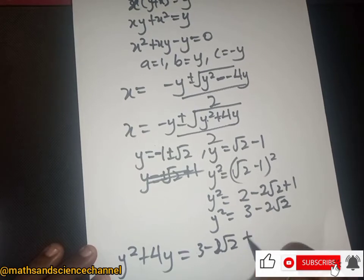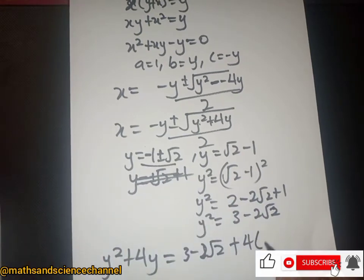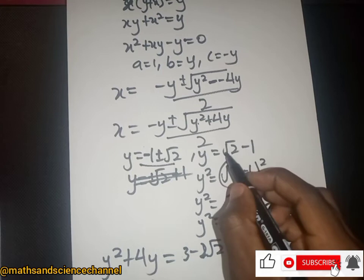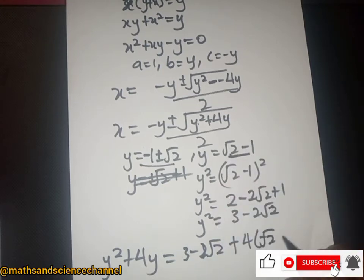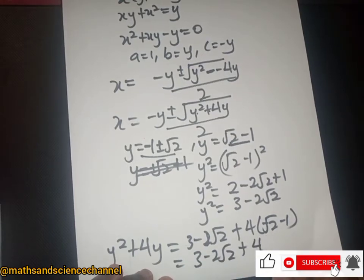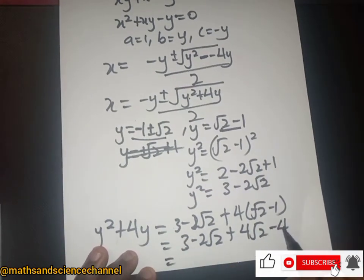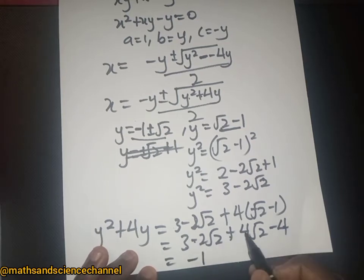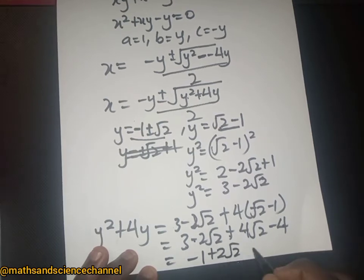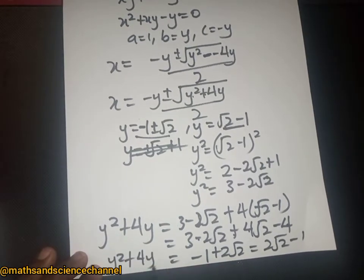With y equal to root 2 minus 1, we have 3 minus 2·root 2 plus 4·(root 2 minus 1), which gives 3 minus 4 plus 4·root 2 minus 2·root 2, simplifying to negative 1 plus 2·root 2, written as 2·root 2 minus 1. So y squared plus 4y equals 2·root 2 minus 1.